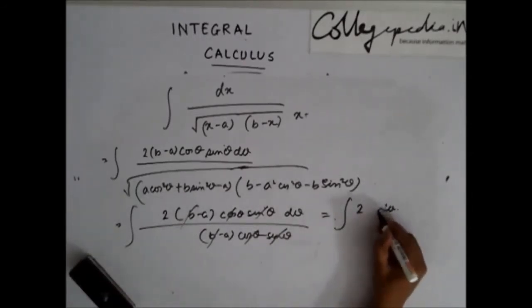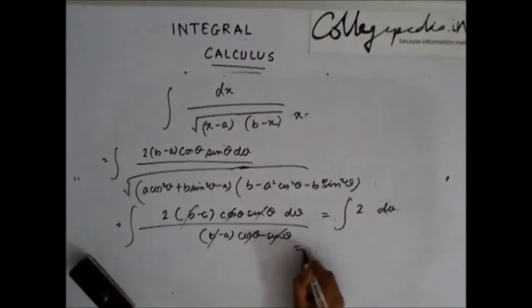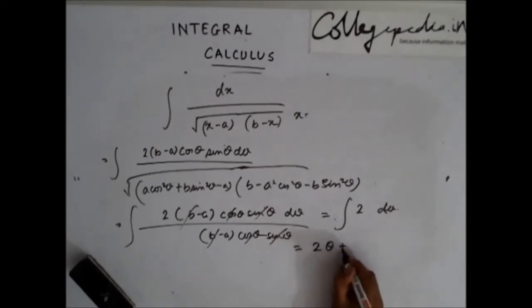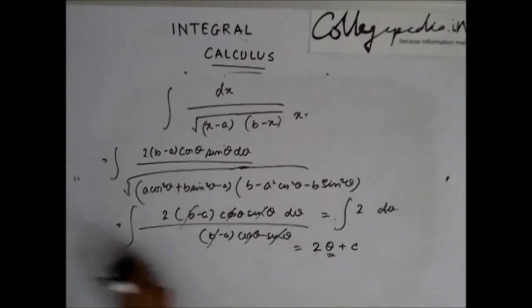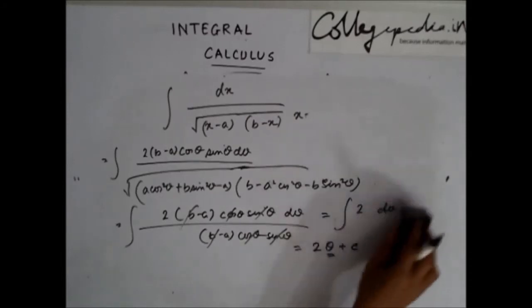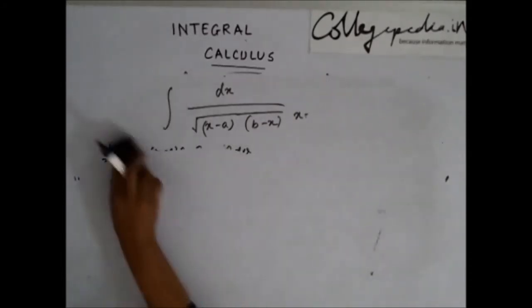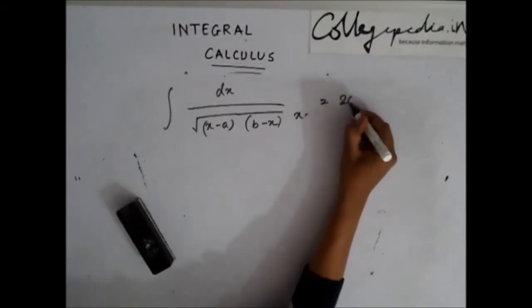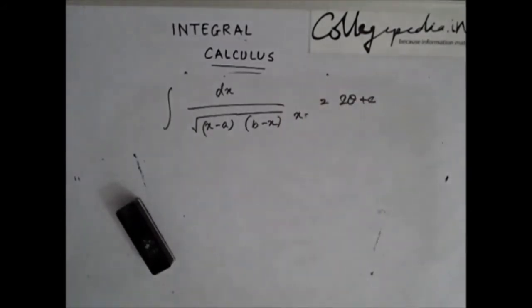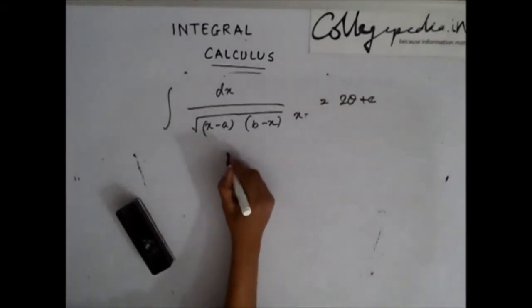Integrating 2 dθ gives 2θ + c. Now we need to replace θ in terms of x.